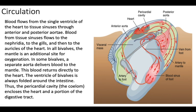Circulation in bivalves is an open circulatory system, meaning blood is directly soaked into different sinuses and cavities across the body. In phylum Mollusca, class Bivalvia, the most common examples — oysters and their relatives — are of prime importance. This has been a brief introduction and concise summary of bivalves. Thank you very much for your attention and time.